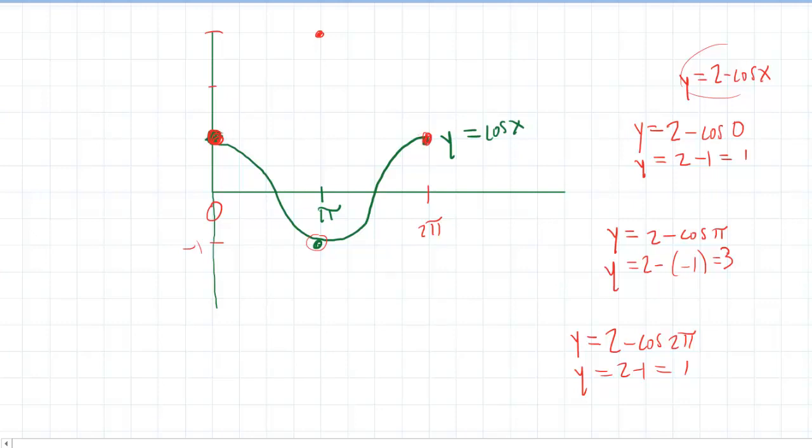So this curve is going to look something like this. And it is our job to find the area between the red and the green curve. And that's going to bring us to step 3 of this process.